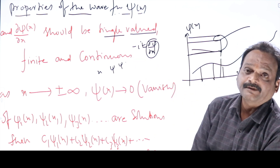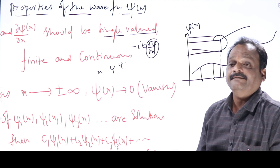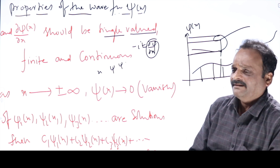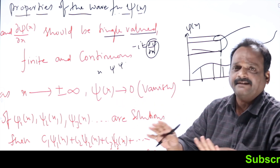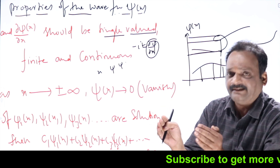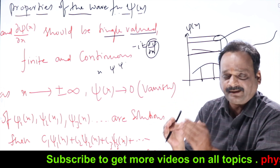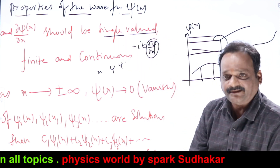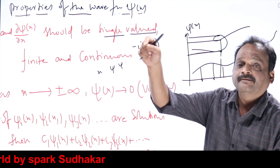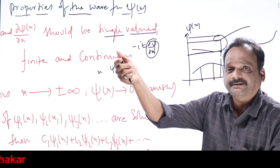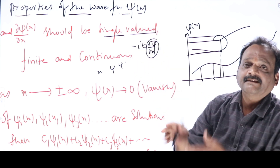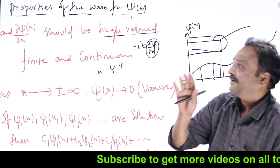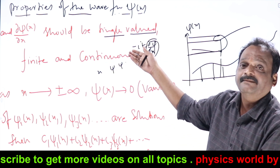Psi should also be finite. If psi becomes infinity, everything becomes infinity. Physics does not work at infinity — infinity is a useful mathematical construction, that's all. In physics, nothing should happen at infinity; everything should be finite only. A particle found at infinity — what is the meaning of infinity? We cannot go to infinity, so psi cannot be infinite because all properties would become infinite.